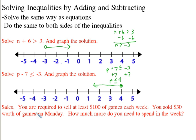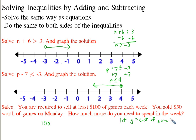As a real-world example: you are a salesperson required to sell at least $100 of games each week. You sold $30 worth of games on Monday. How much more do you need to sell in the week? Let g equal the cost of games you need to sell. $100 is what you actually have to have — if you sell more, the game store will be happy.